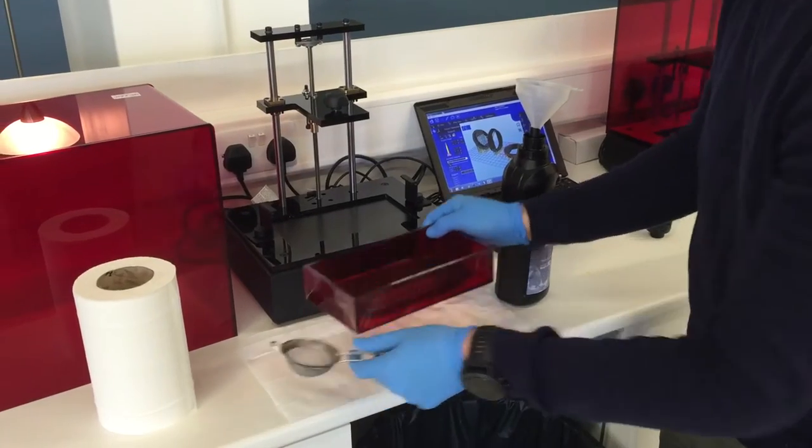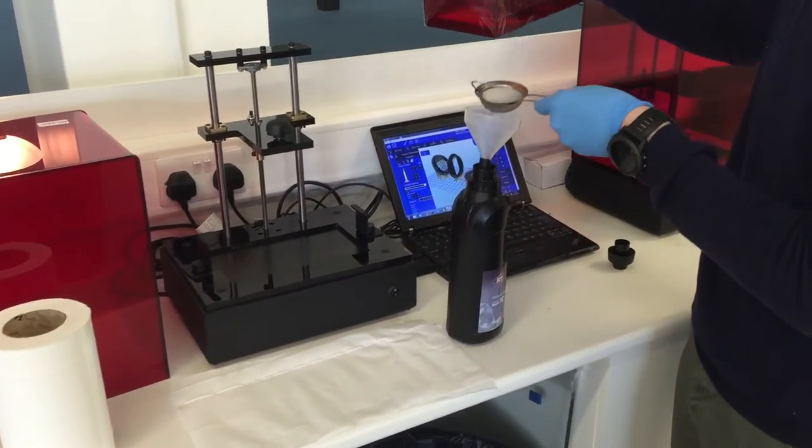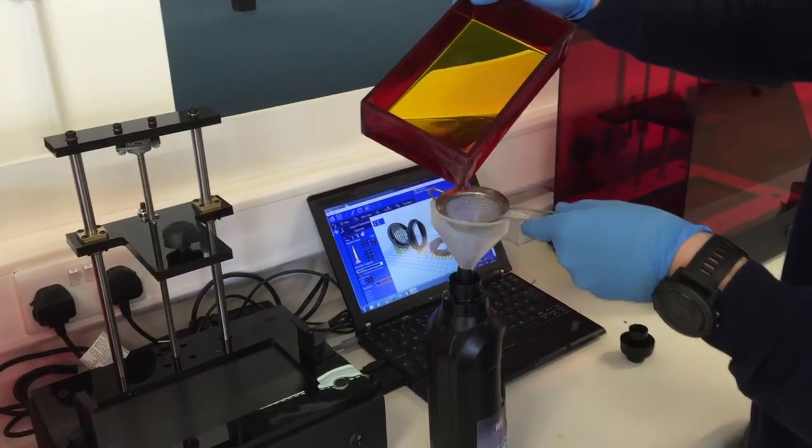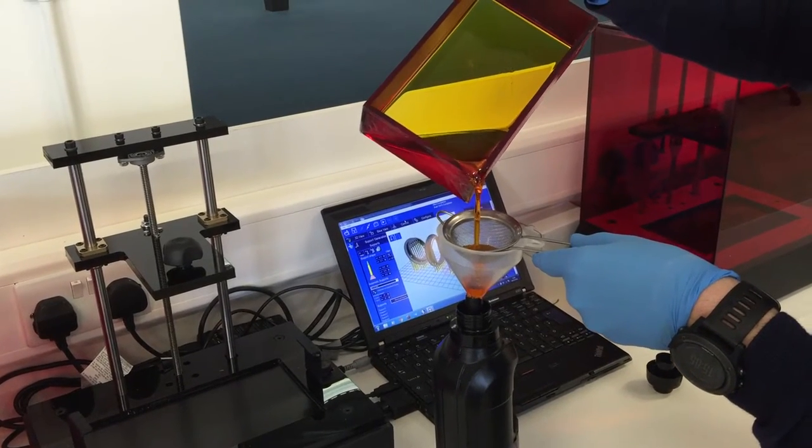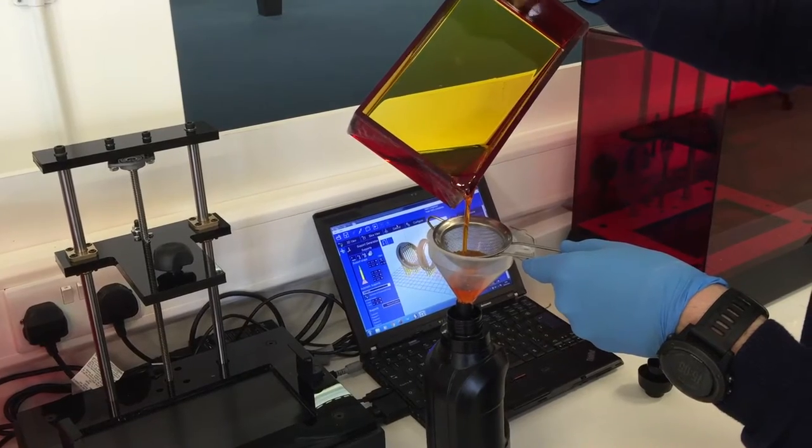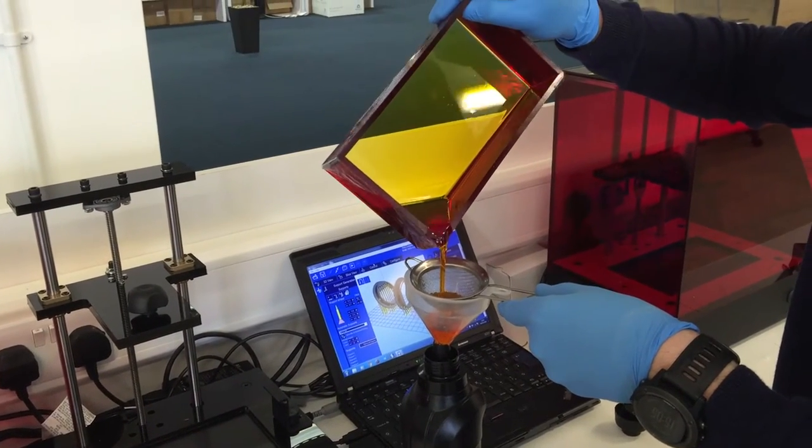We next want to sieve it back into the bottle. This will make sure that no pieces get left in the vat and ruin your next print.